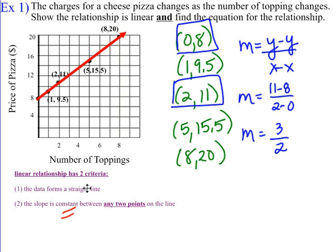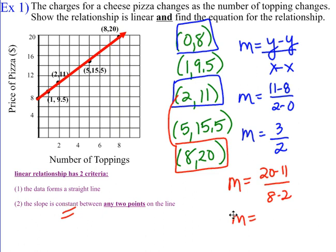Remember, it says it has to be constant. So let's try two other points. Let's take these two points here and determine the slope. So 20 take away 11 and 8 take away 2. If I reduce that, 20 take away 11 is 9, 8 take away 2 is 6. And if I reduce 9 over 6, I'm going to get back to 3 over 2. So we can see consistency. So we're showing that the relationship is linear.